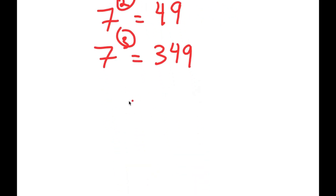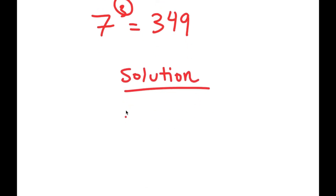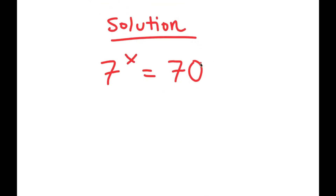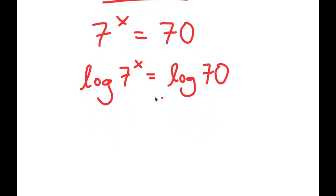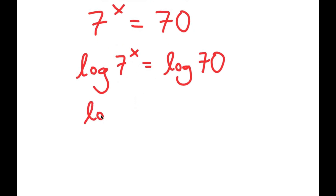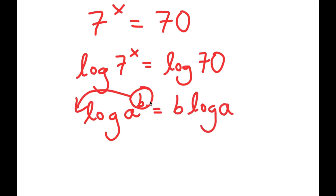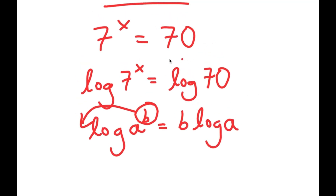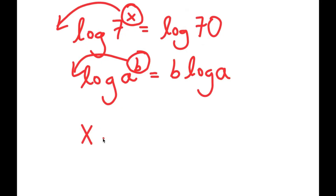To actually solve for x, my equation is 7 to the power of x equals 70. What I recommend for any exponential equation like this is taking the log on both sides. This lets us use the property that log of a to the power of b equals b times log a, which allows us to move x to the front as an actual term. So I get x times log 7 equals log 70.